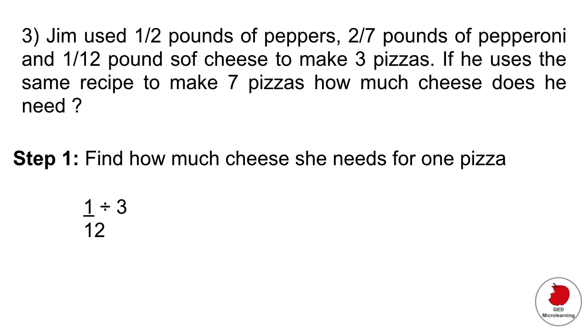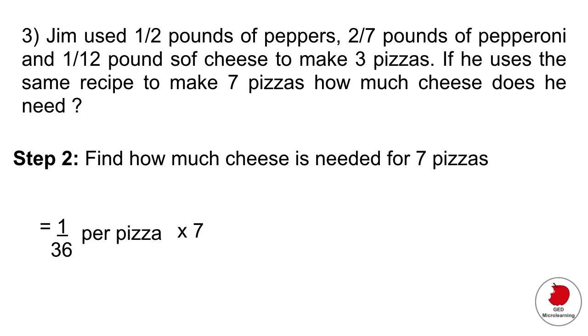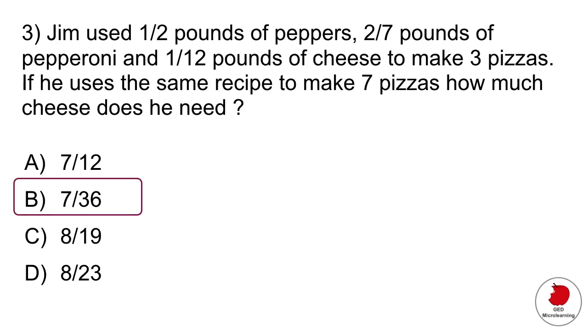Step two is find out how much cheese you need for seven pizzas. You just multiply the number of pizzas which is seven by that fraction of cheese per pizza. So it gives you 7/36 which is option B.